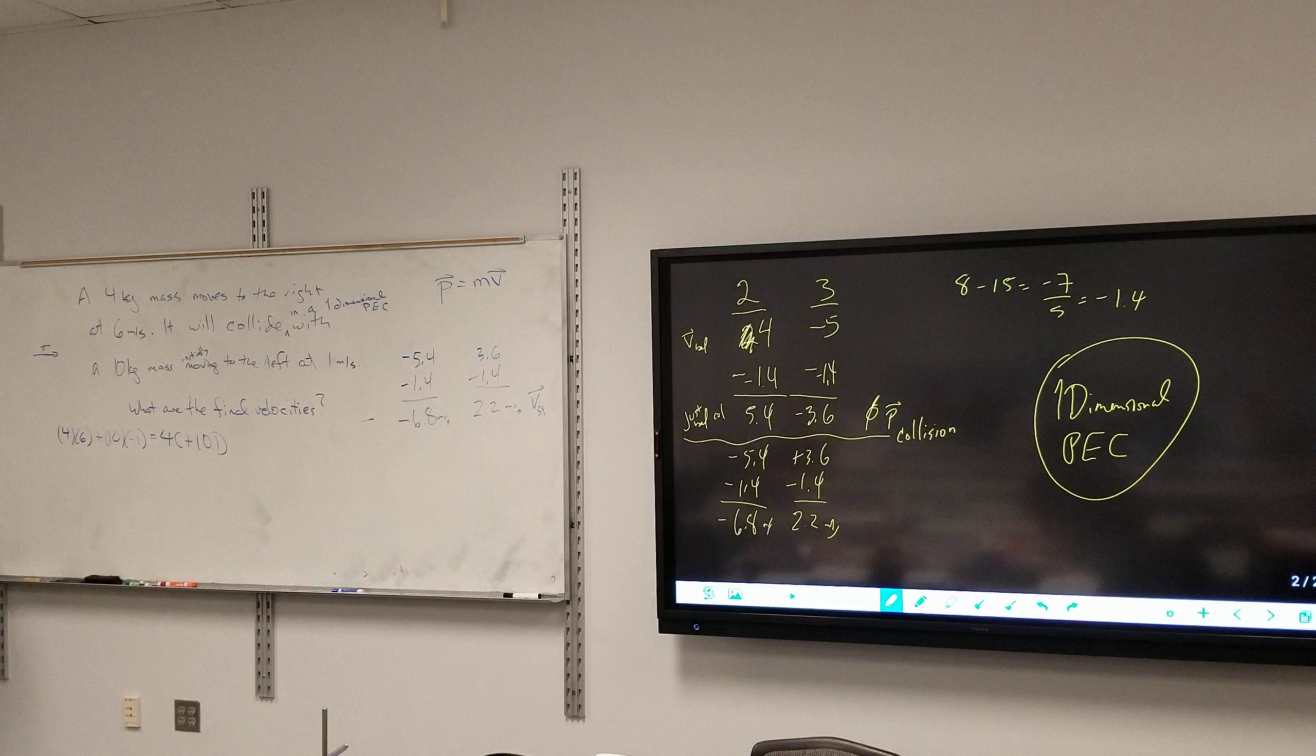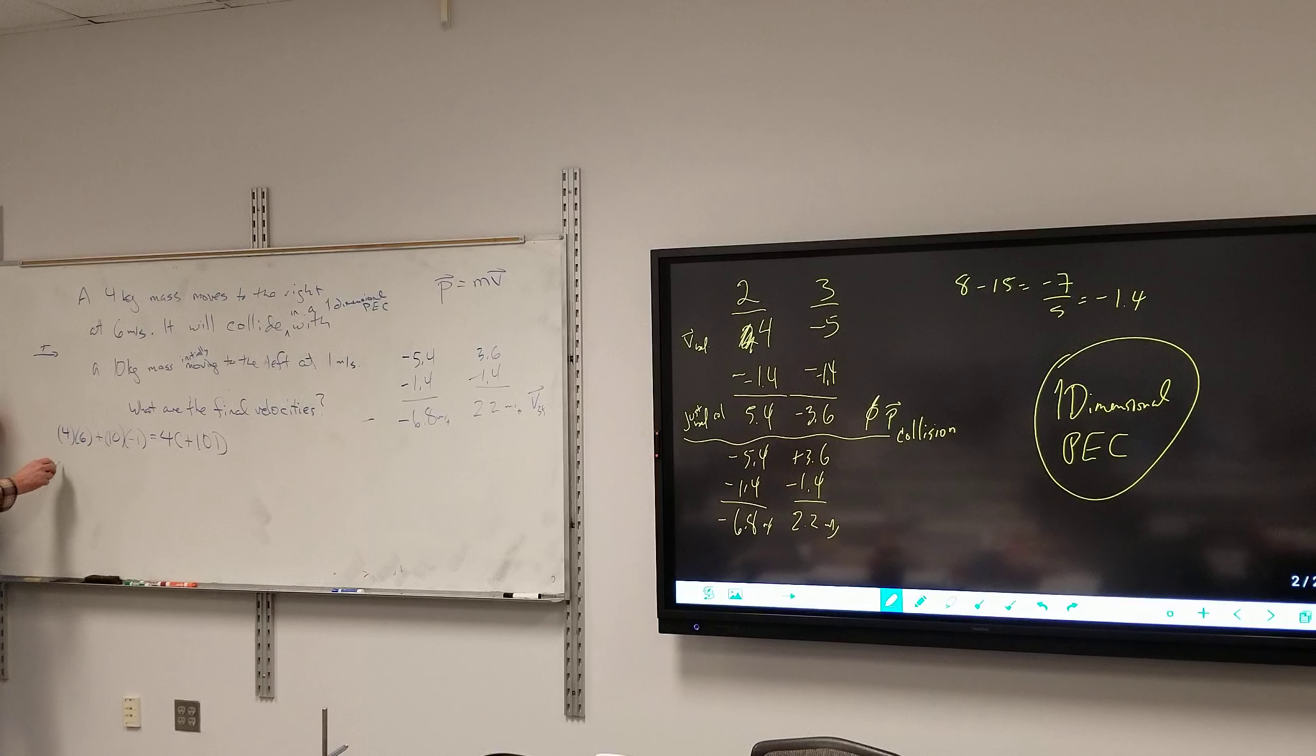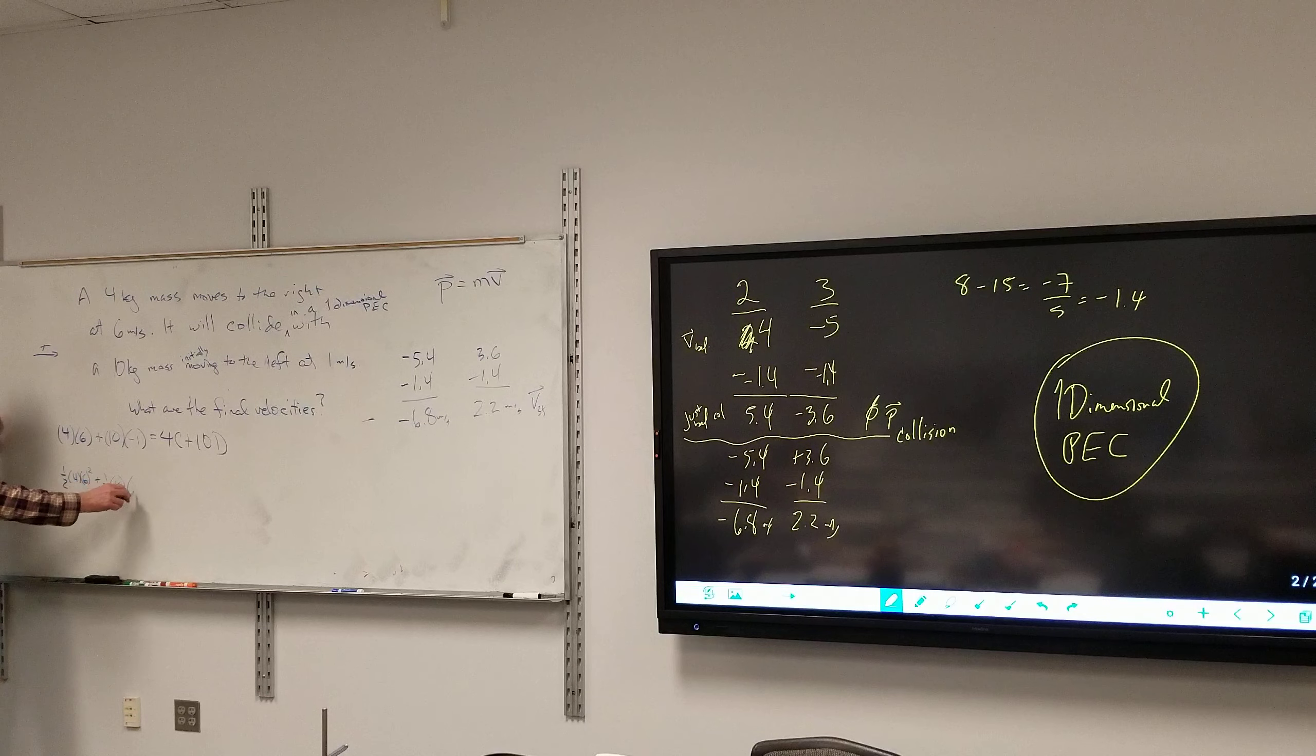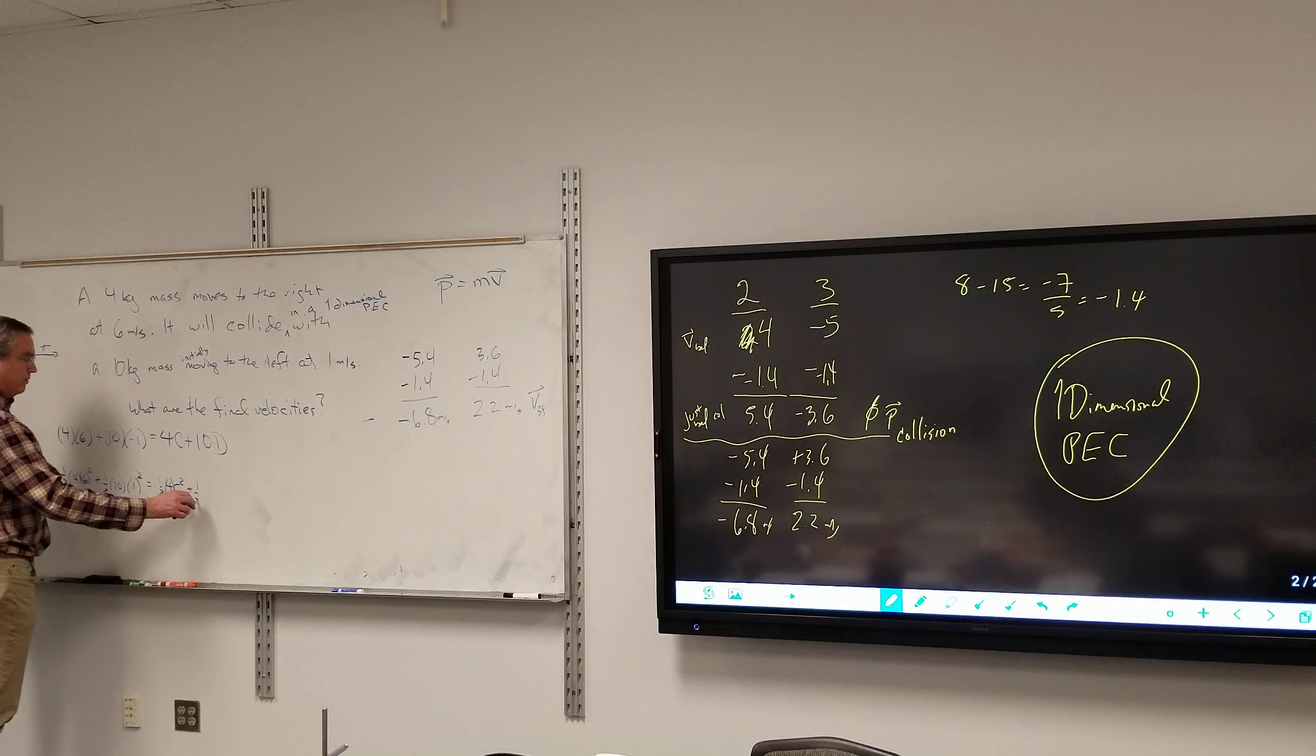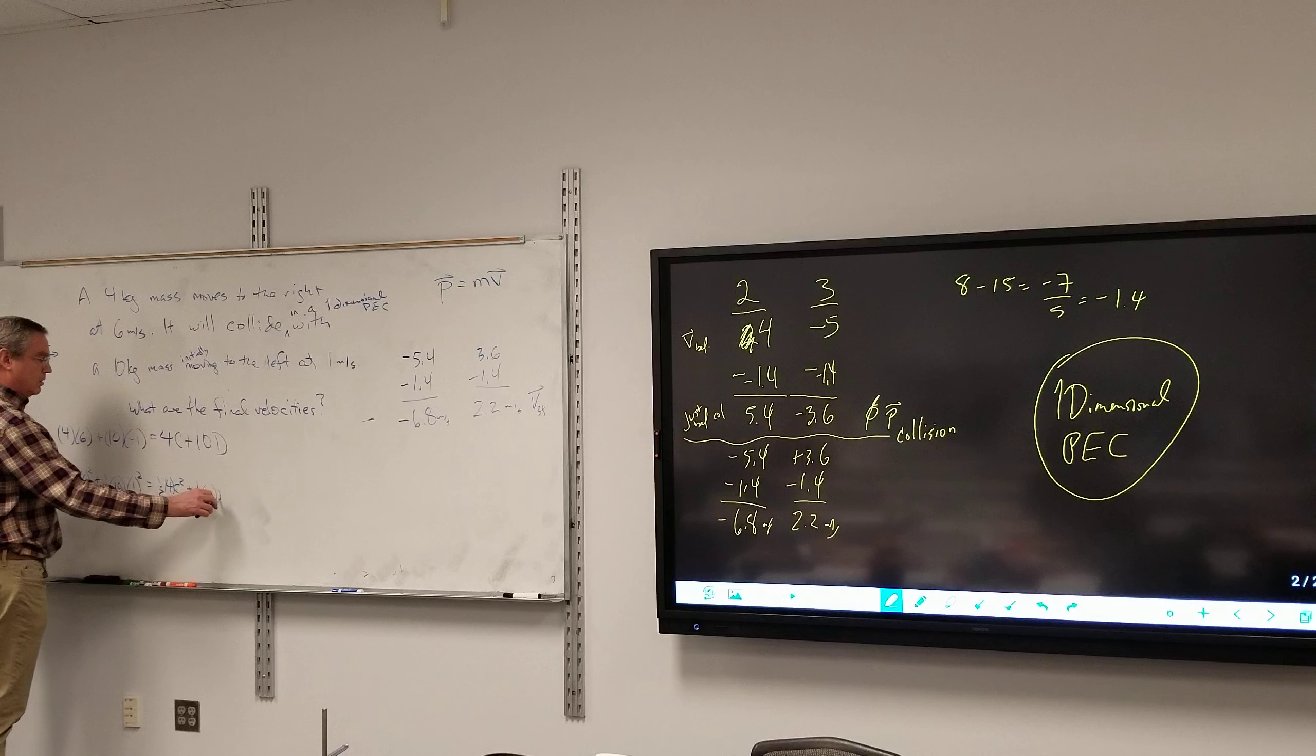In method 1, you would also have the kinetic energy. So I got 1 half, 4, 6 squared plus 1 half, 10, 1 squared equals 1 half, 4C squared plus 1 half, 10, D squared.